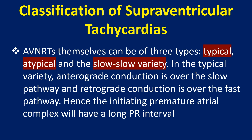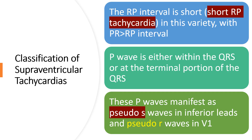AVNRTs themselves can be three types: typical, atypical, and the slow-slow variety. In the typical variety, anterograde conduction is over the slow pathway and retrograde conduction is over the fast pathway. Hence, the initiating premature atrial complex will have a long PR interval. The RP interval is short — a short RP tachycardia — with PR more than RP interval.